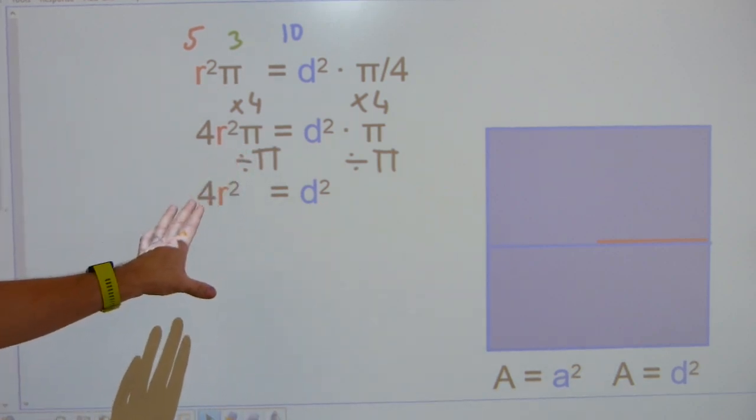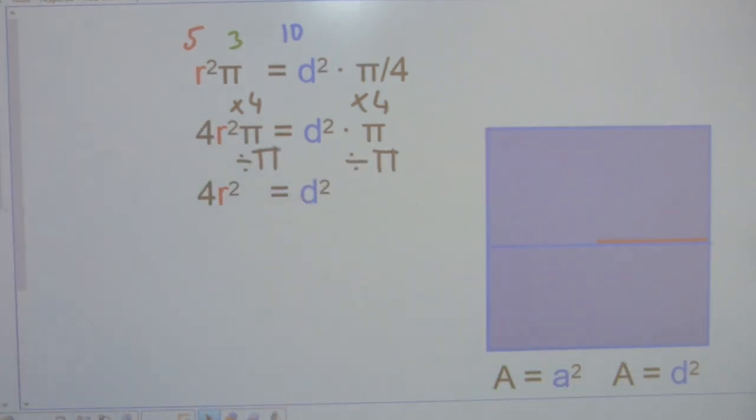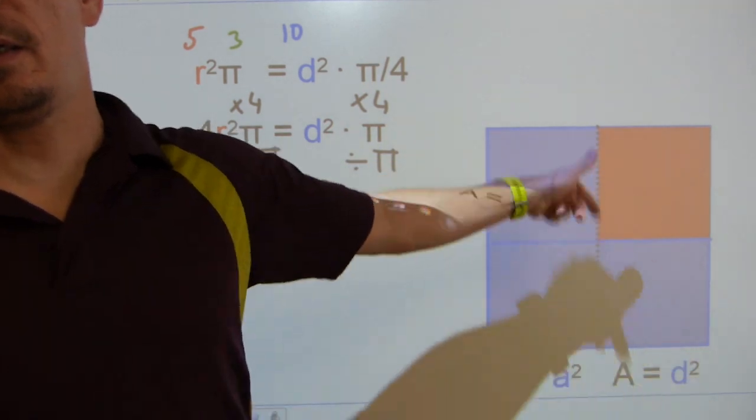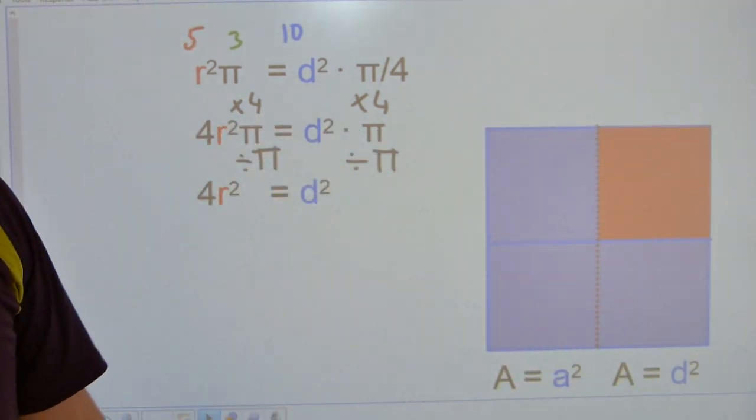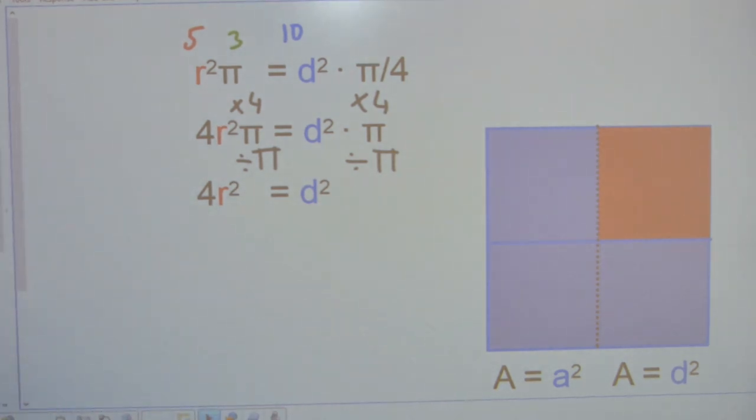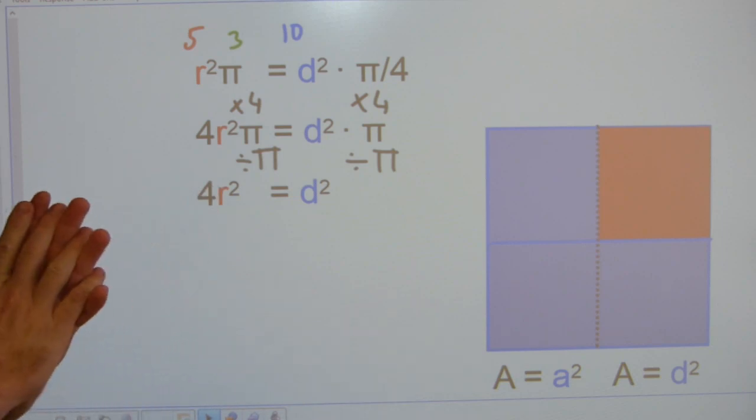And this line here states that if you square this radius, you can have a square made out of it. And that square will fit 4 times into this bigger square.